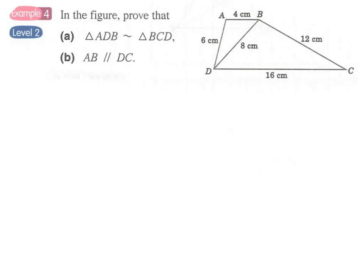Now we come to example 4. In the figure, prove that triangle ADB, this smaller triangle, is similar to triangle BCD.